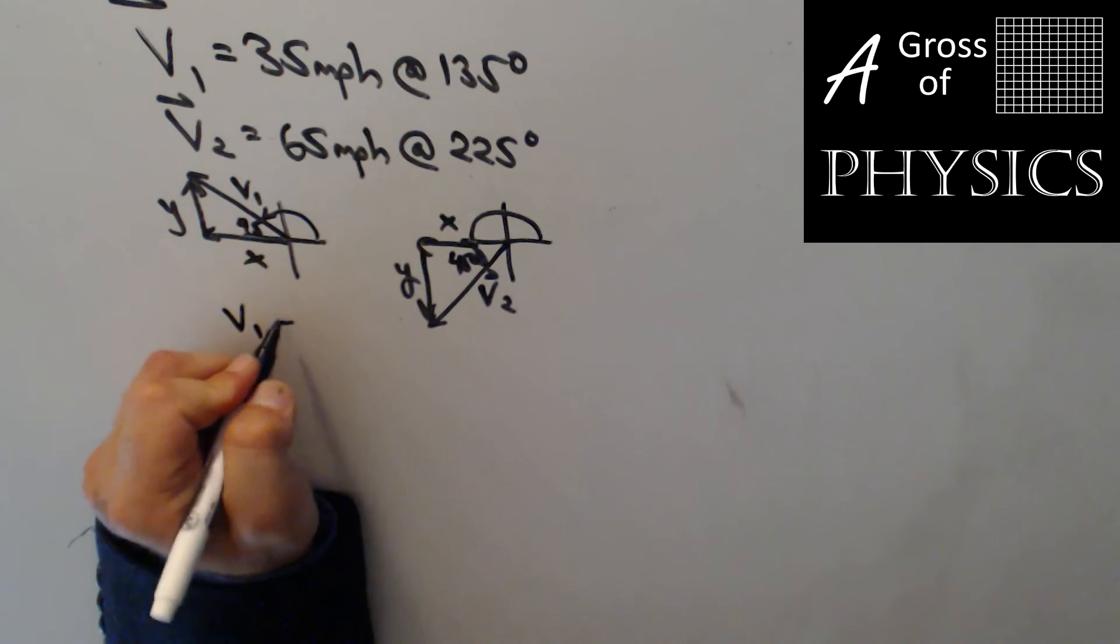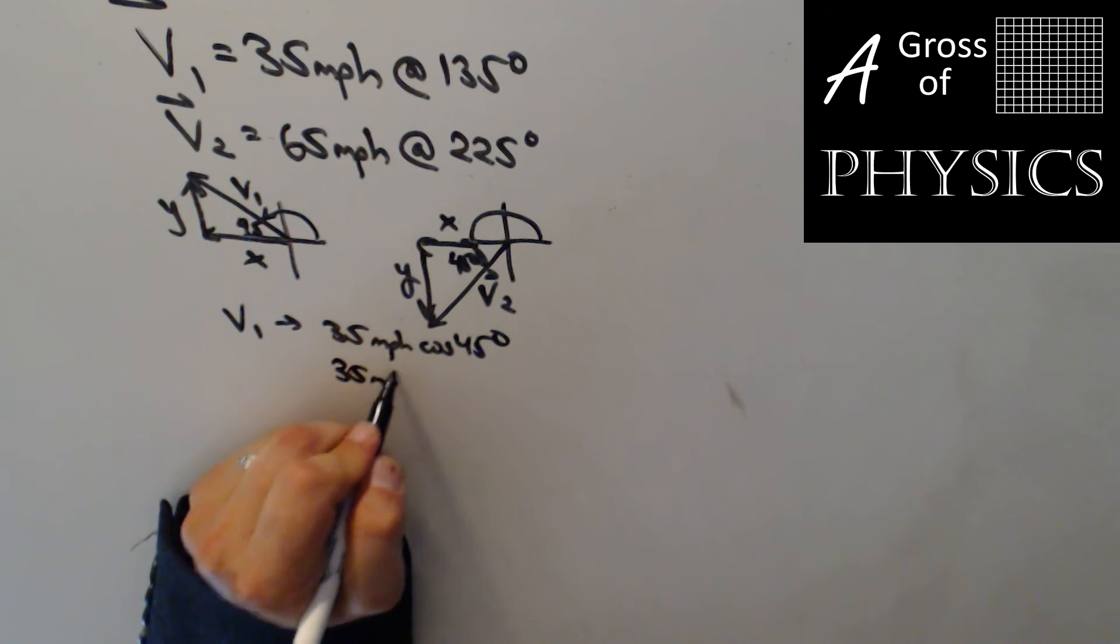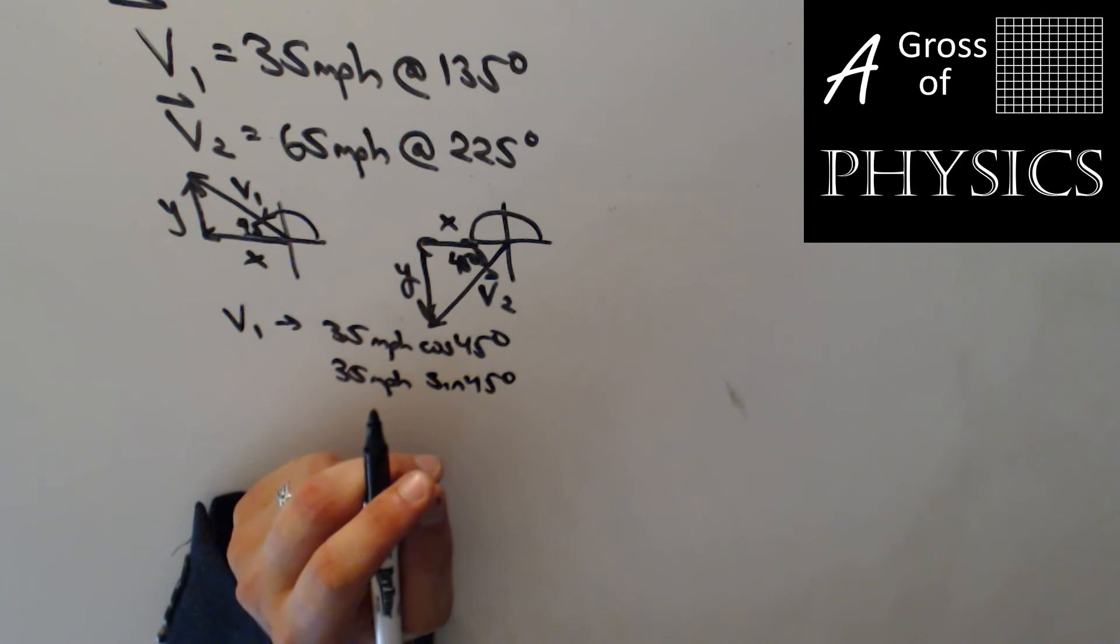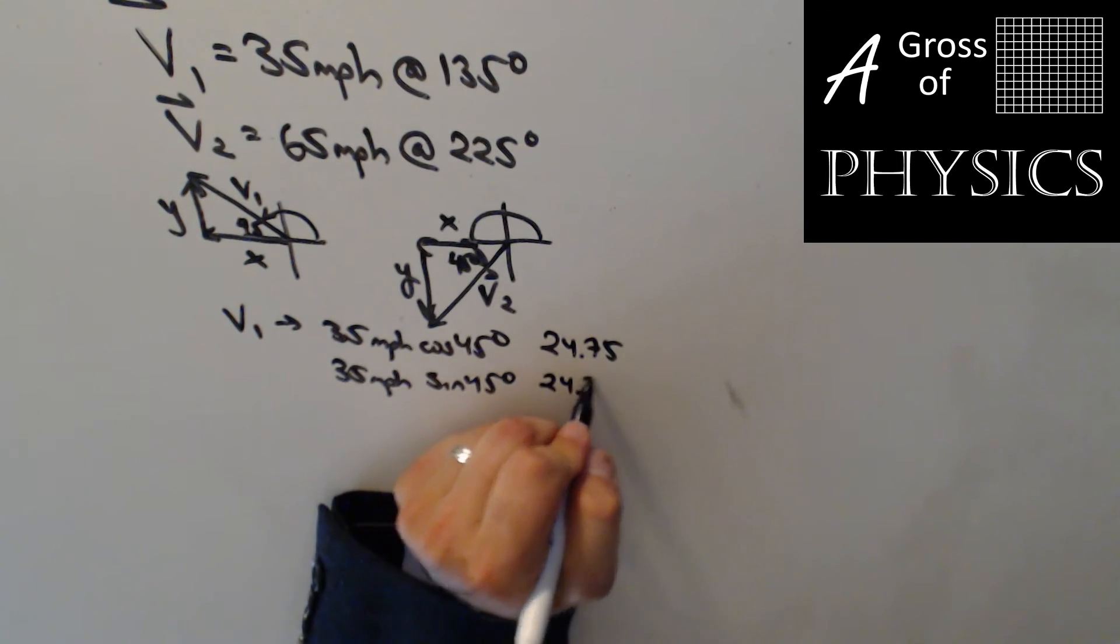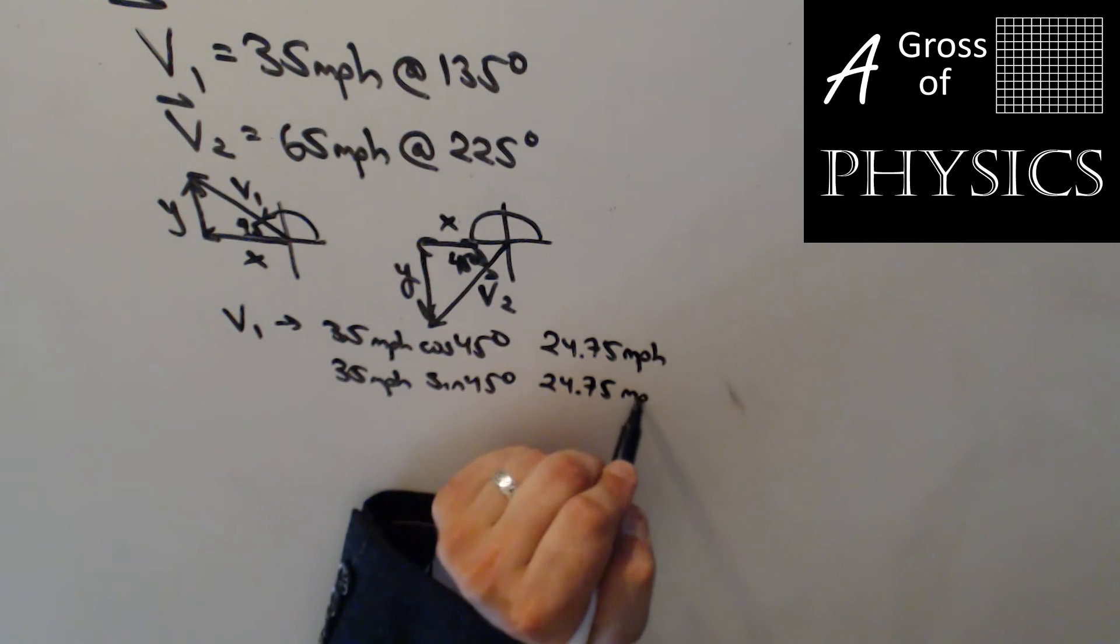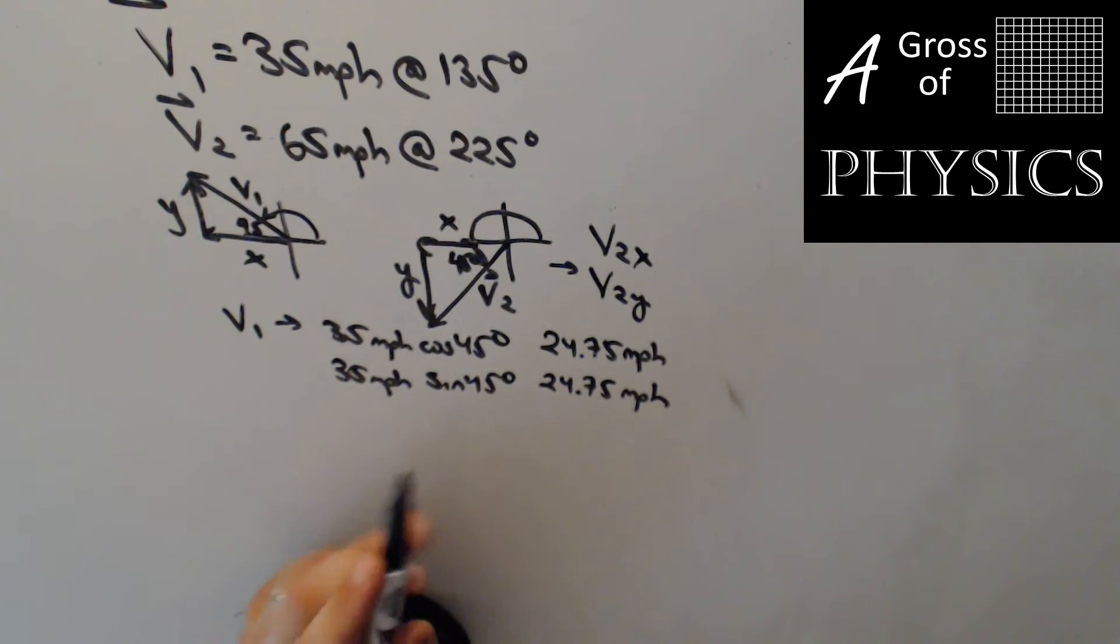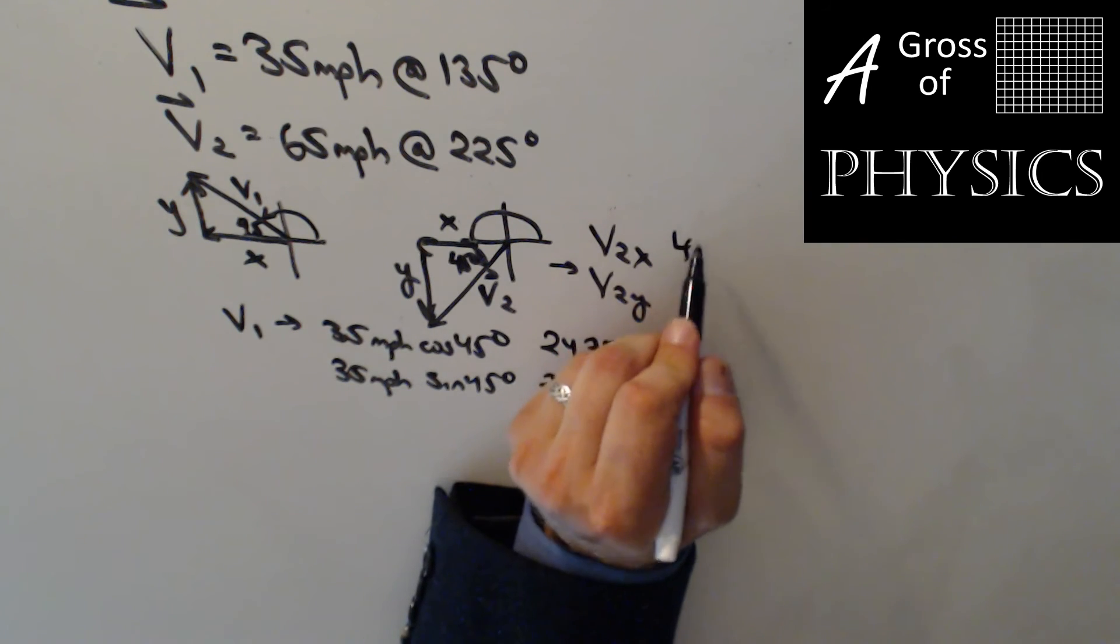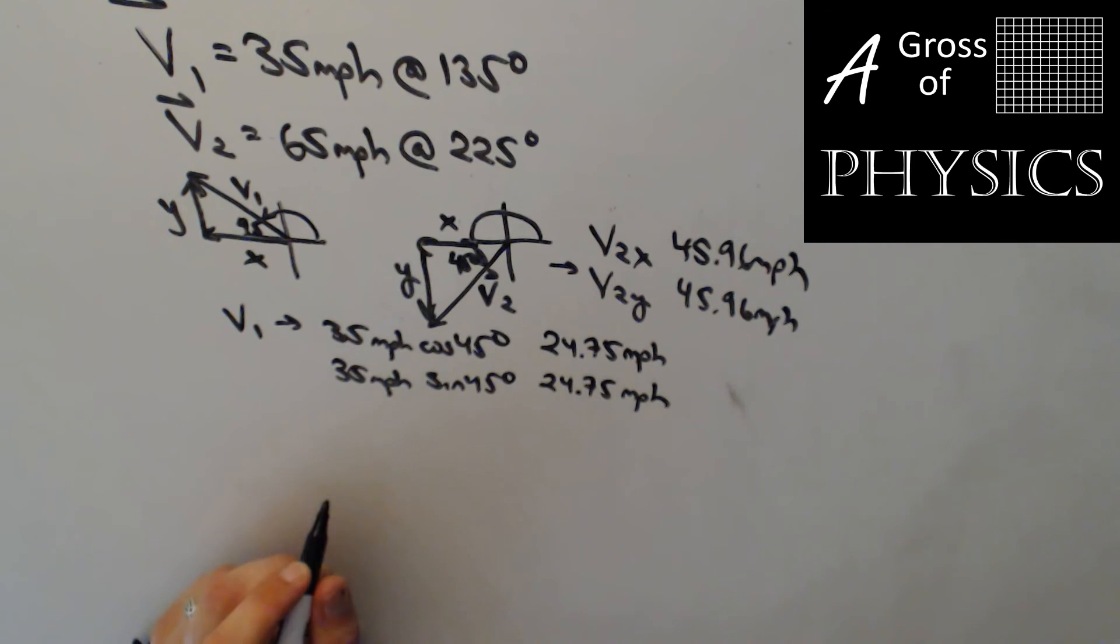Now for v1, it's going to be 35 miles per hour cosine 45 degrees, 35 miles per hour sine 45 degrees. So the math is easy because since we have 45, if I just do cosine 45 times 35, I have 24.75. And that's going to be true for both legs. And it's miles per hour, miles per hour. For v2, v2x, v2y, I'm going to use 65 times cos 45 and I'm going to get 45.96. And 45.96 miles per hour, miles per hour. So each of the legs are going to be the same for each vector, but the different vectors have unique legs.